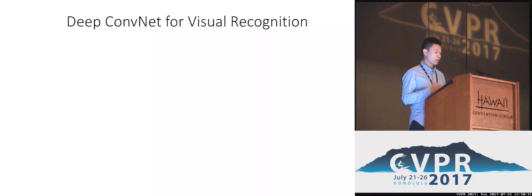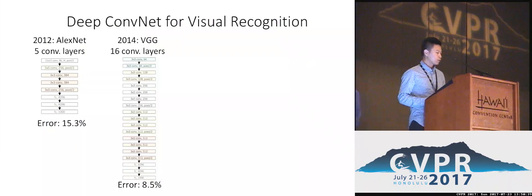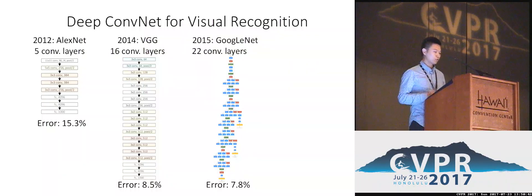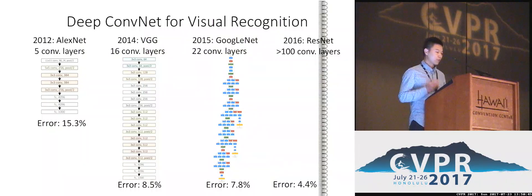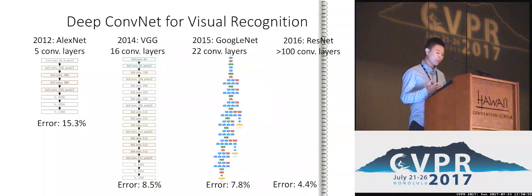People design and propose deeper networks to get better performance. From 2012, starting with AlexNet with 5 convolutional layers, to VGG with 16 convolutional layers, to GoogLeNet with 22 convolutional layers, to recently Residual Network with more than 100 convolutional layers — people propose those deeper networks to get better performance.